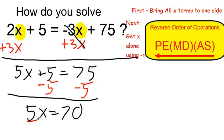Then I can divide both sides by 5, and x is going to be 70 divided by 5, so x is going to be equal to 14.